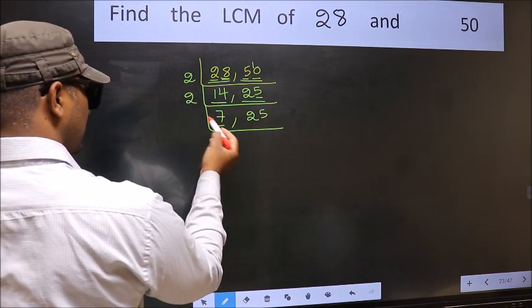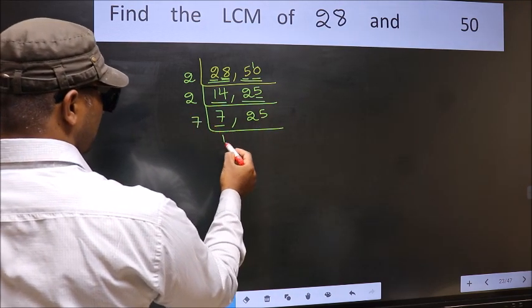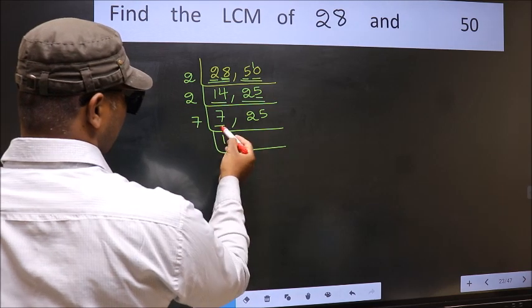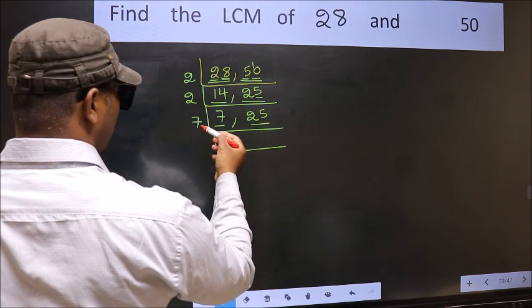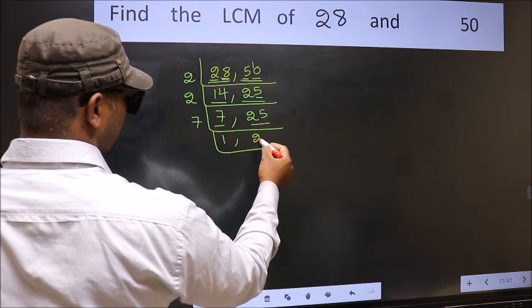Now we have 7 here. 7 is a prime number, so 7 once 7. The other number 25, not divisible by 7, so we write it down as it is.